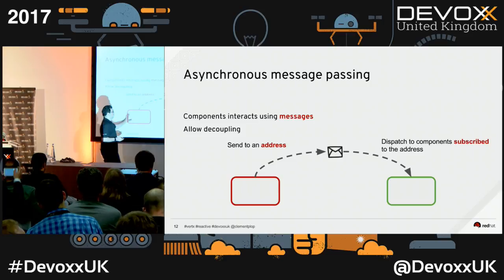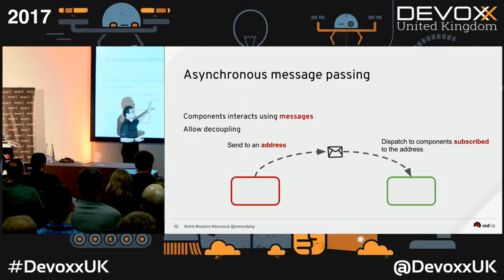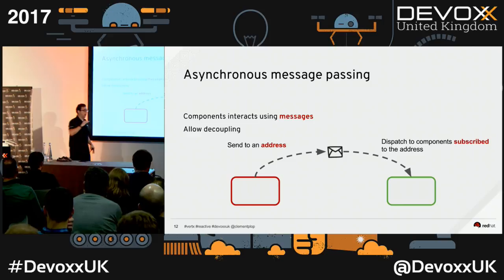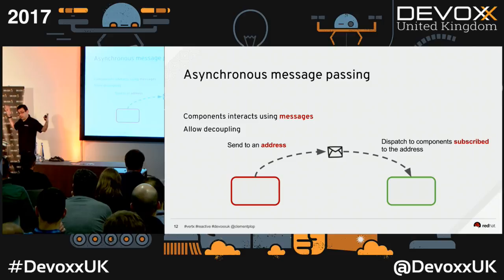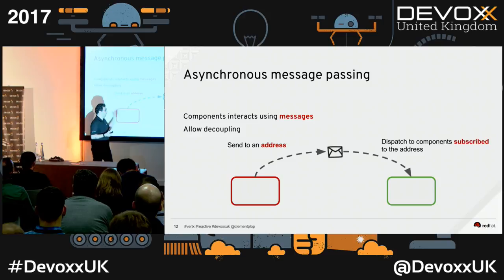When you send a message, you send it to a virtual address — not to a specific component. Maybe some will pick it up; I don't care. The system dispatches the message. This gives complete decoupling between components. When sending the message I'm non-blocking, doing true asynchronous message passing, so I can still handle the load. If there is a response, I receive it via another message.